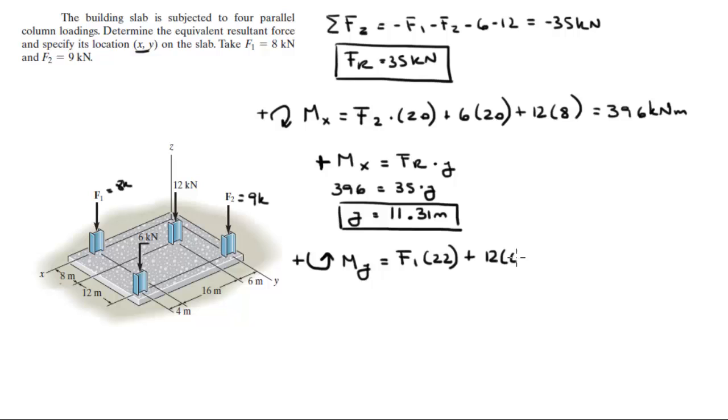Plus 12 times 6. This is 12 kilonewton force and it's a distance 6 from the y. Plus 6 times 26. This is 6 kilonewton force and it's at a distance 4 plus 16 plus 6 which is 26 meters. So, when you add all this up together, you get that this is equal to 404 kilonewton meters.